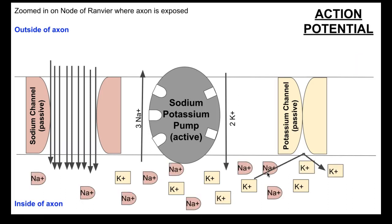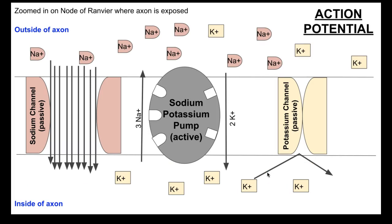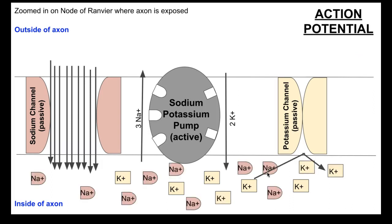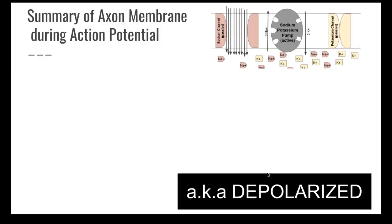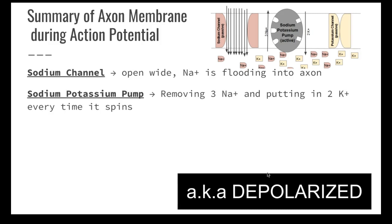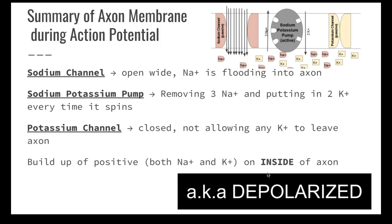So eventually at the end of action potential, we're going to see a positive charge of around positive 35 to positive 40 millivolts. We went from negative 70 when it was polarized, and now we're on the positive side — so now we call it depolarized. It's the opposite: it's no longer negative. To review: sodium channel is wide open, sodium is flooding in, the sodium-potassium pump is removing three sodium and adding two potassium, and the potassium channel is closed. We're building up a positive charge inside the axon, ending up with positive 35 or positive 40 millivolts during depolarization.